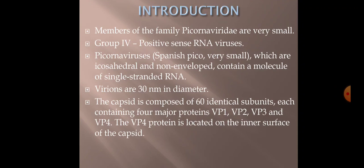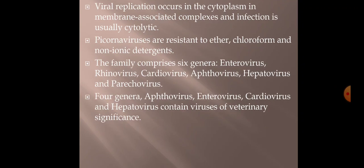Picornaviruses are non-enveloped and contain single-stranded RNA. There are certain important structural proteins present in the capsid: VP1, VP2, VP3, and VP4. Out of all these, VP4 is located inside or on the inner surface of the capsid; the rest are present on the outer surface. Because this is an RNA virus, replication occurs in the cytoplasm.